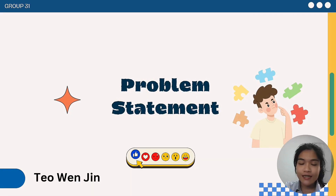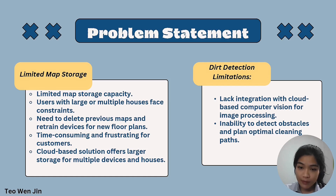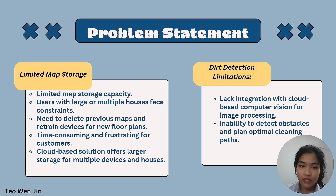There are a total of three Problem Statements in our system: Limited Map Storage, detection limitations, and lack of remote control capabilities. For the first problem statement, the current system has limited map storage capacity. Users with large or multiple house spaces face constraints because they need to delete previous maps and retrain the device for a new floor plan. This is very time-consuming and frustrating for customers.